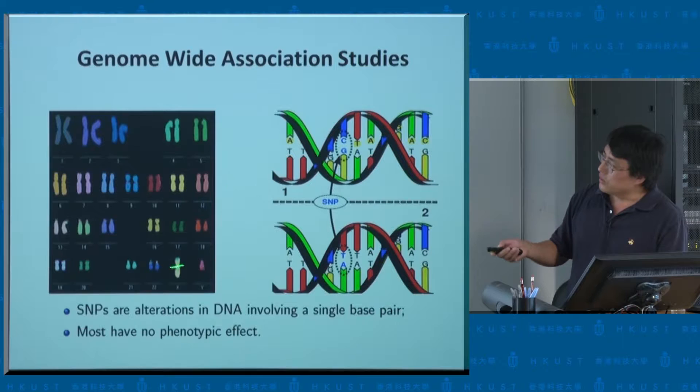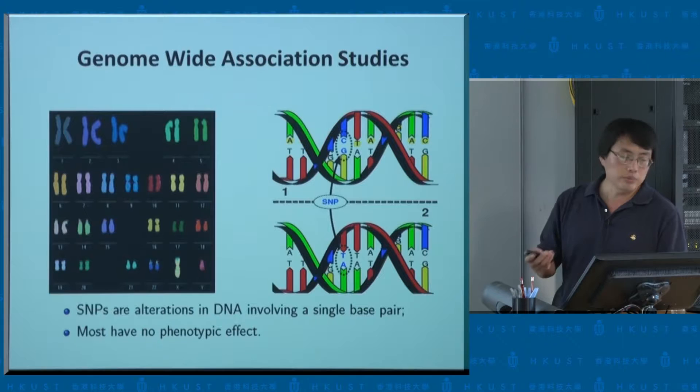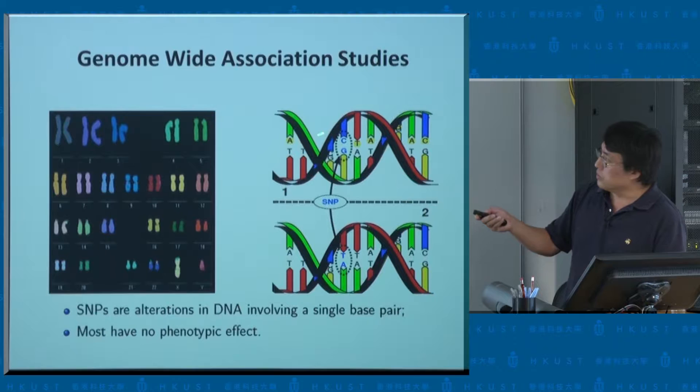We have 23 pairs of chromosomes, in total three billion base pairs. For the most part, 99.9% of people in this room are very identical — we have identical copies of nucleotide sequences. But from time to time things are different. The one you inherit from your mother may be different from the one you inherit from your father. One person has two copies of a chromosome, one from the father and one from the mother, and the mother has a CG pair while the father has a TA pair.